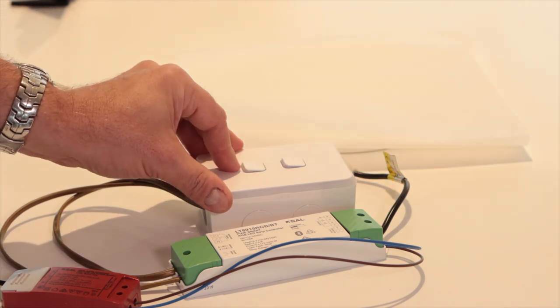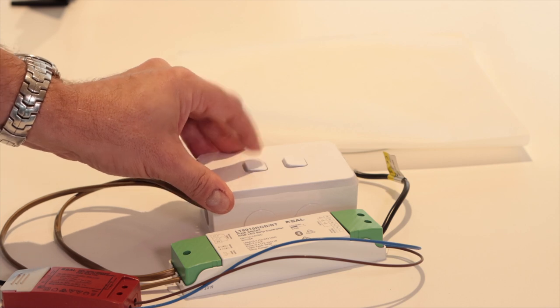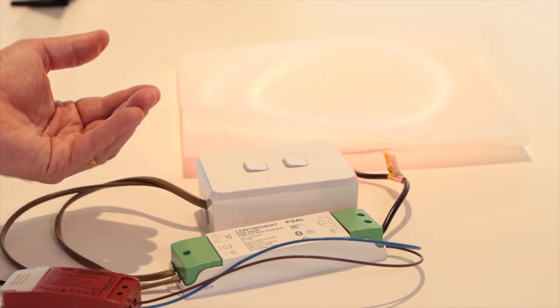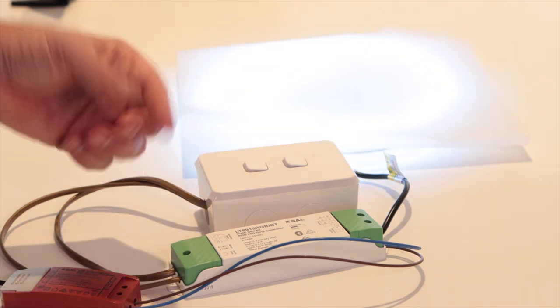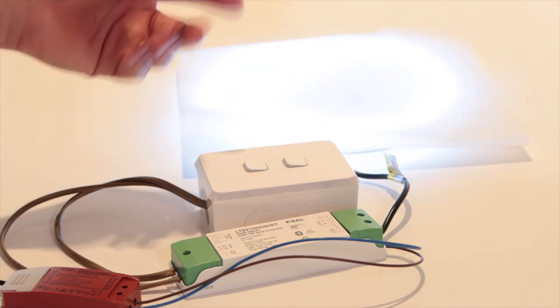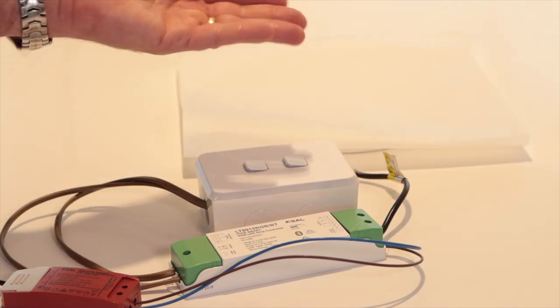Now I can turn it off from there and if I turn it back on it immediately kicks back into that same color chase that was happening. To reset it I can just double click it, immediately goes back to white at full output, and I can turn it off and I can start again.